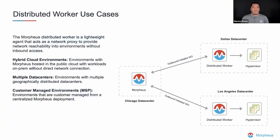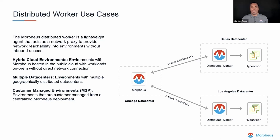So what is the distributed worker? The Morpheus distributed worker is a lightweight agent that acts as effectively a network proxy to provide reachability into environments that do not have inbound access. A common example for those familiar with ServiceNow is a mid server. The distributed worker makes an outbound call on port 443 HTTPS to initiate the initial connection with the Morpheus server.